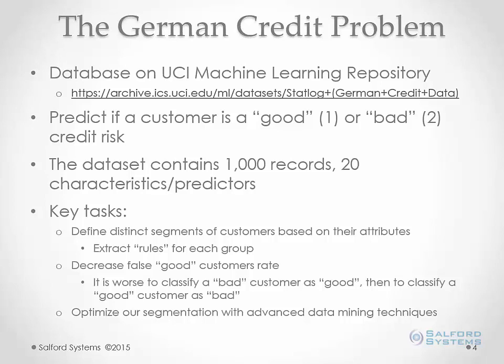We also want to decrease our false good customer rate. In this application, it is much worse to classify a bad customer as good than to classify a good customer as bad. You want to catch all of the bad credit risks at the sacrifice of some good credit risks. This is one of the control parameters we'll be looking at in the software, and finally, we'll optimize our segmentation with some advanced techniques.